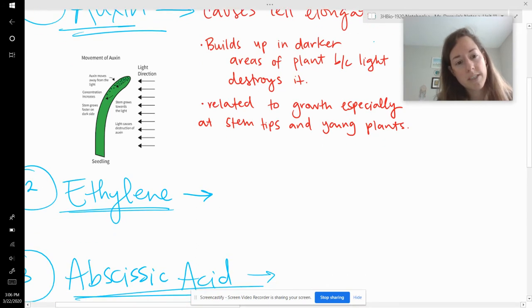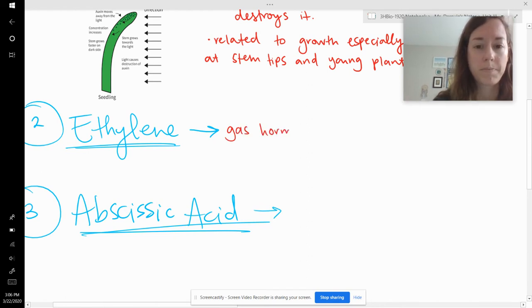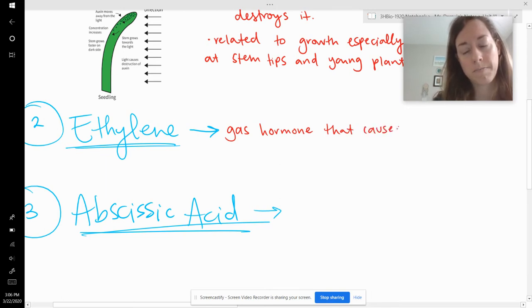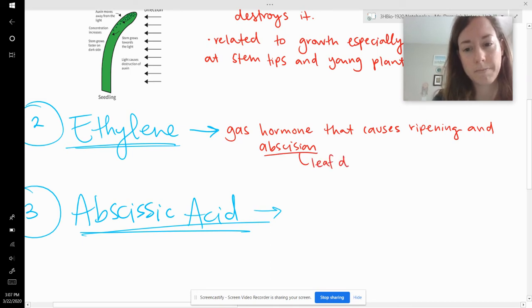The other two hormones that are on this list are going to be related to ripening and even like death of certain parts of the plant. So that's how auxin is a little bit different. Okay. So let's move on to ethylene. Ethylene is really interesting because it's actually one of the only hormones that is a gas. So this is a gas hormone. It causes ripening and abscission, which we'll talk about more in a second. Abscission is leaf death and dropping.